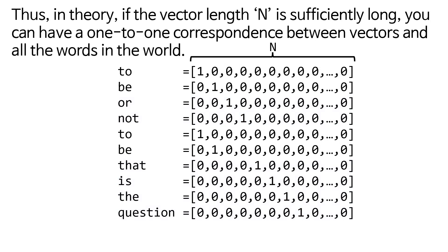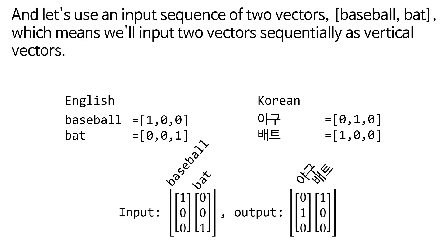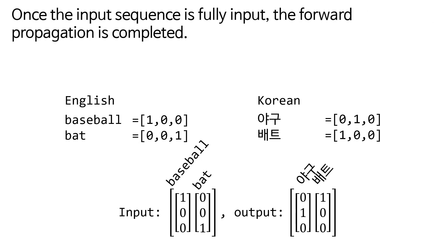Thus, in theory, if the vector length n is sufficiently long, you can have a one-to-one correspondence between vectors and all the words in the world. In this video, for convenience, let's use two one-hot vector dictionaries with n equals 3. And let's use an input sequence of two vectors, baseball, bat, which means we'll input two vectors sequentially as vertical vectors. Once the input sequence is fully input, the forward propagation is completed.